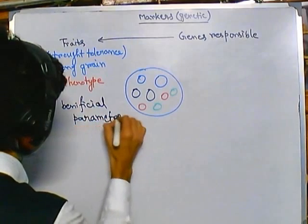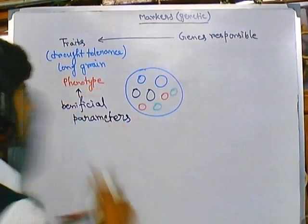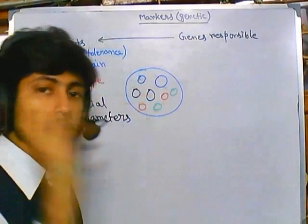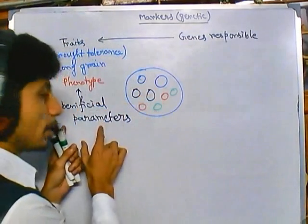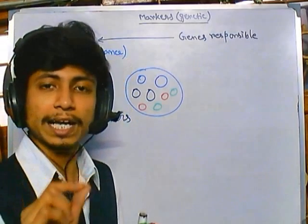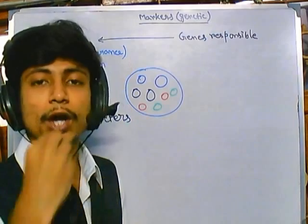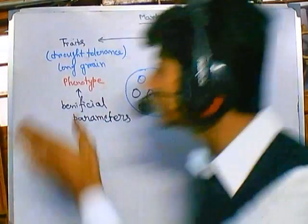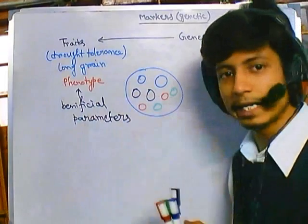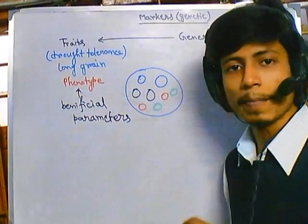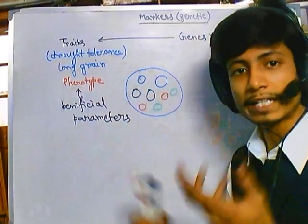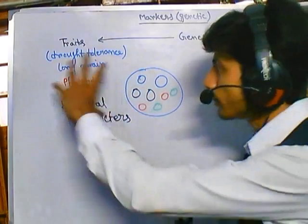All of these things are the beneficial parameters we are looking for. We need to pick only those which have those beneficial parameters. These beneficial parameters are called visual markers, because we can actually visualize them — we can visualize drought tolerance, grain length, heat tolerance capability, and infection tolerance capability.